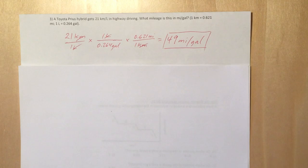You have this Toyota Prius that gets 21 kilometers per liter, and you want to figure out how many miles per gallon is that.